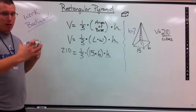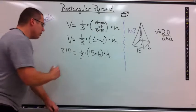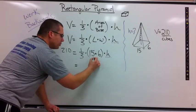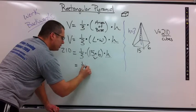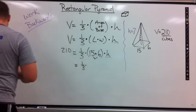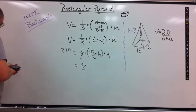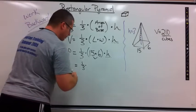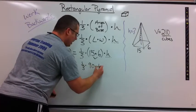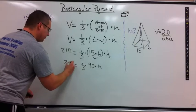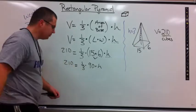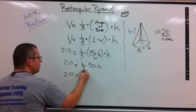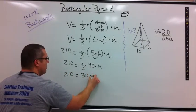Once I substitute everything in, I want to combine terms. Shrink my equation down so I'm not looking at a bigger picture. This is all multiplied. So I would do parentheses. This is 1/3 times 6 times 15 equals 90 times h equals 210. Next line down, I can multiply.